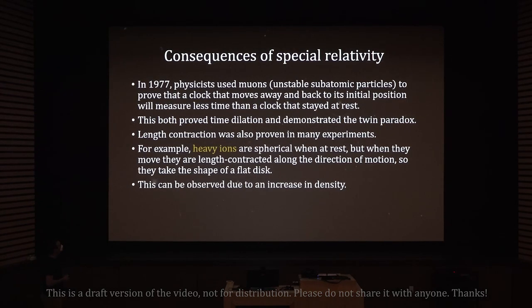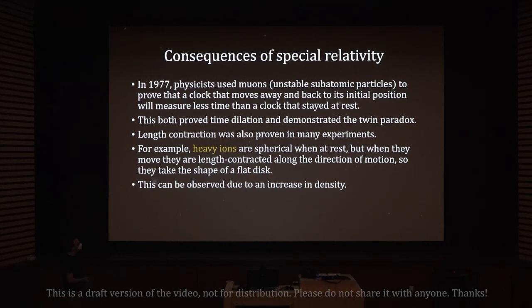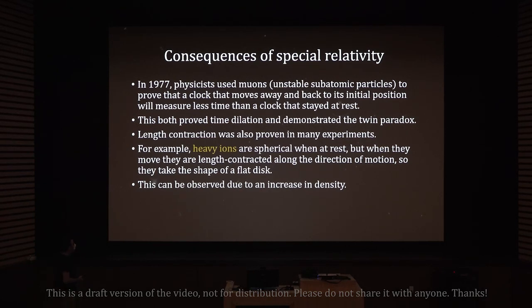In 1977, physicists used muons — unstable subatomic particles — to prove that a clock that moves away and back to its initial position will measure less time than a clock that stayed at rest. This both proves time dilation and demonstrates the twin paradox experimentally. Length contraction was also proven in many experiments — for example, heavy ions, which are atoms with all electrons removed, are spherical at rest but become length-contracted into a flat disk along their direction of motion when moving at relativistic speeds, observable through an increase in density.